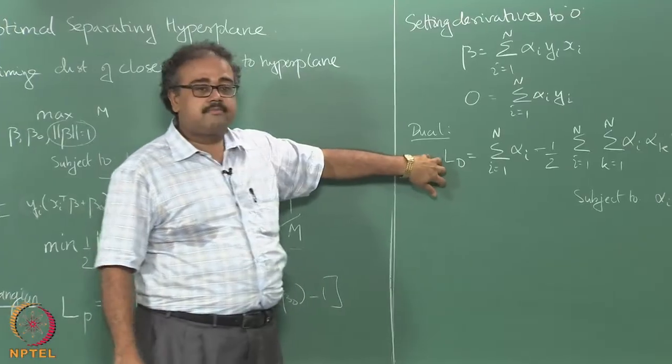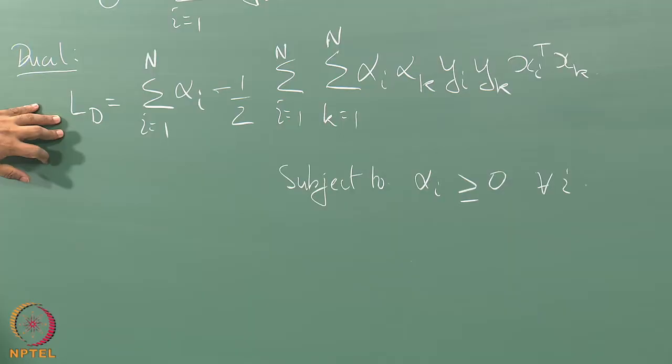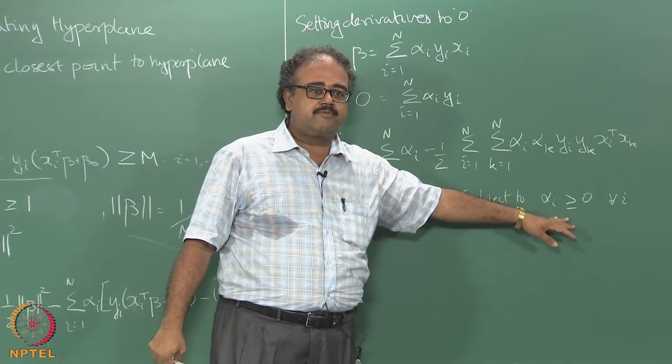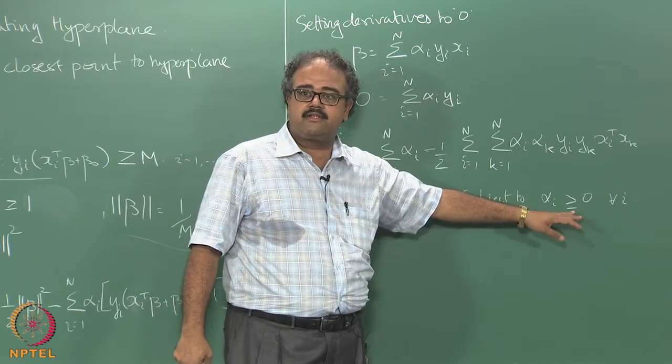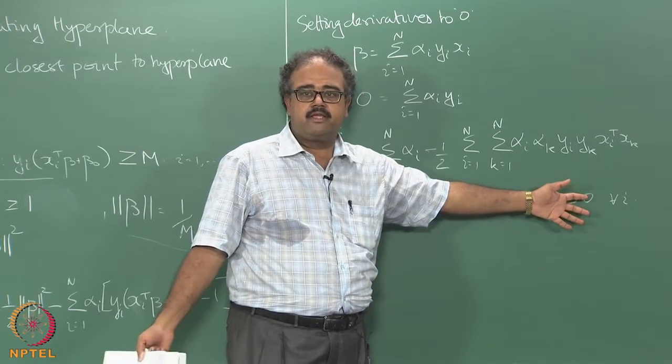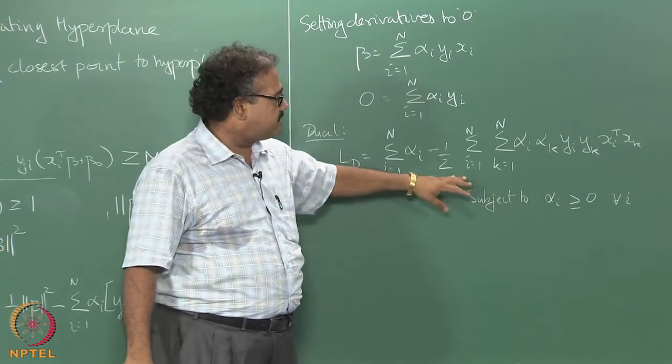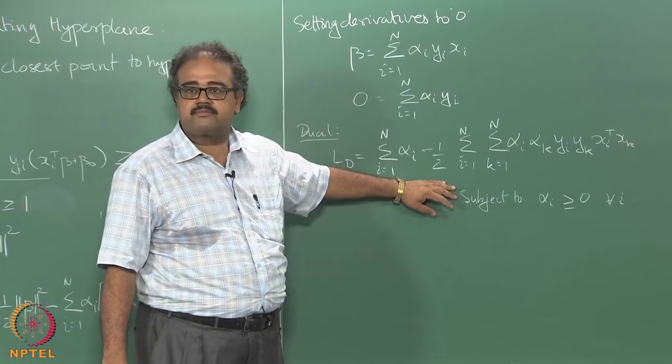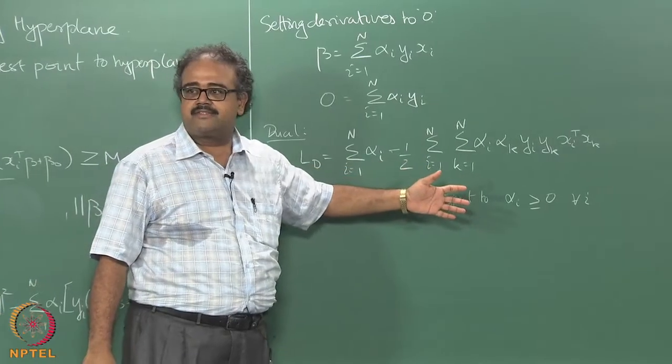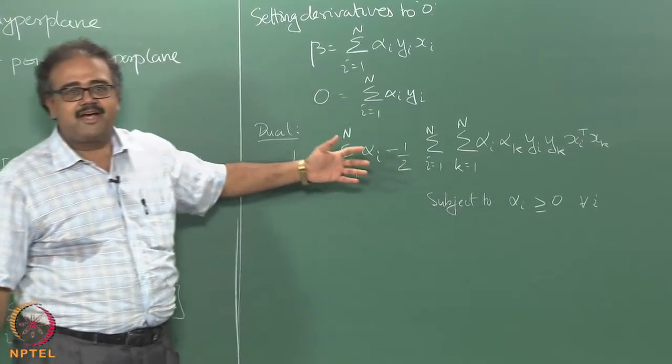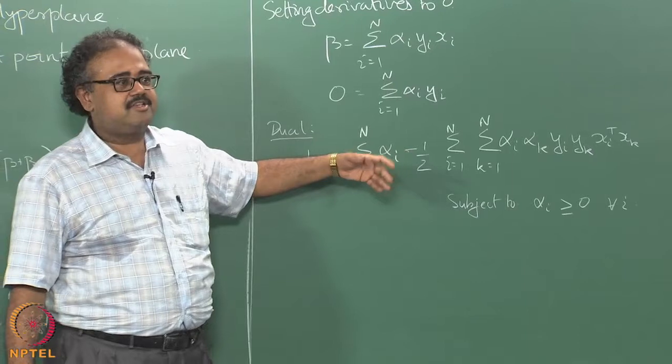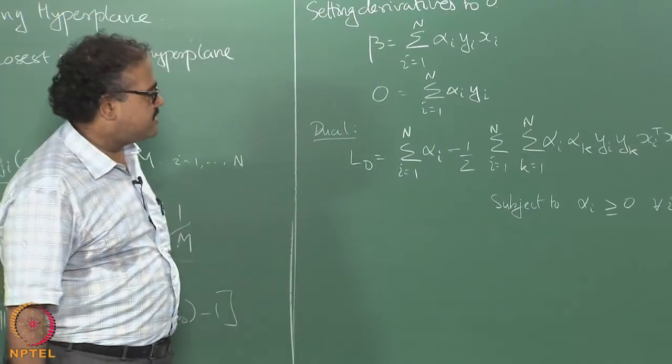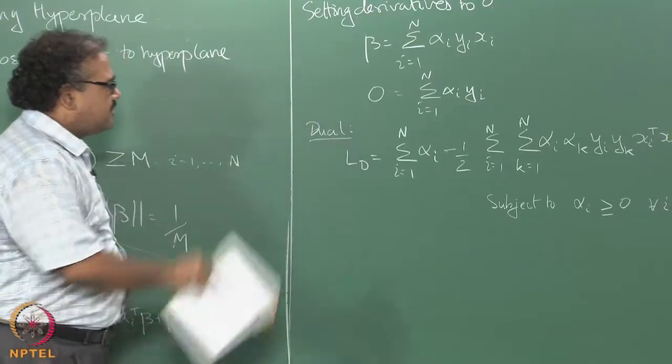The dual is going to be a slightly simpler form. Why is it simpler? The constraints have become a lot simpler - it's just going to be alphas should be non-negative, that's all. It turns out there are efficient ways of solving optimization problems of this form. There are lots of packages that solve this for you, but you just need to know what optimization problem you are solving. I don't want you to use it as a black box.